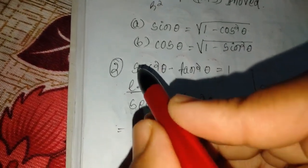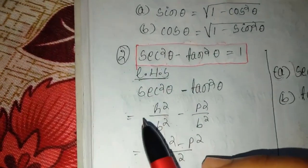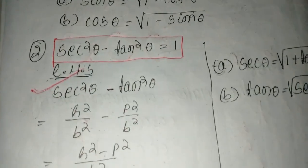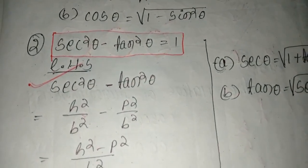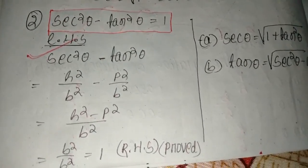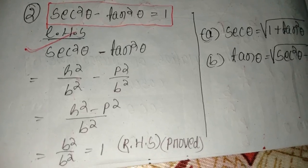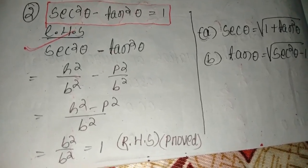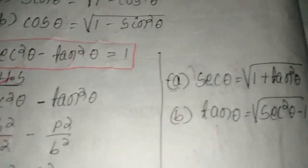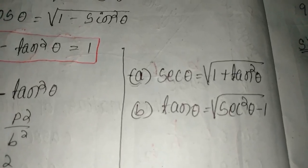The second formula or second relation is sec²θ − tan²θ = 1. LHS: (H/B)² − (P/B)² = (H² − P²) / B². According to Pythagoras, H² − P² = B², so B²/B² = 1. Proved. From this we get: sec theta equals the square root of (1 + tan²θ), and tan theta equals the square root of (sec²θ − 1).